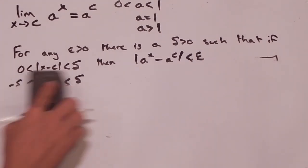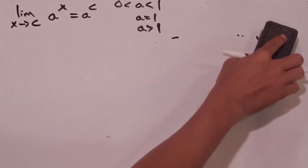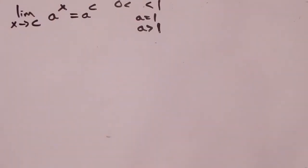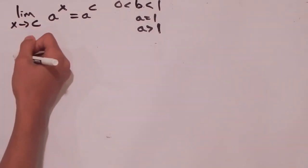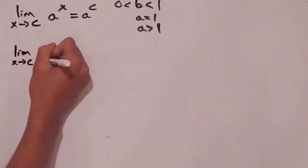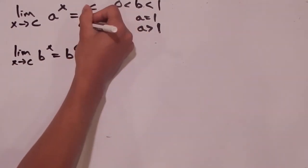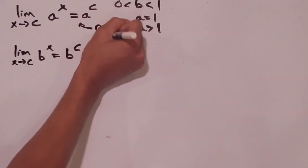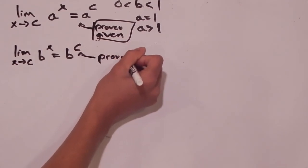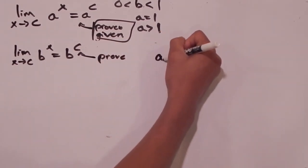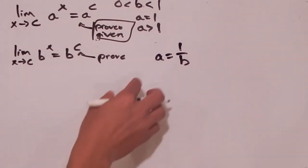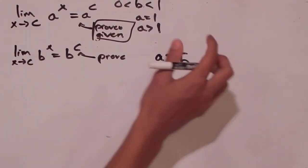Now we'll prove this for when a is between 0 and 1. Let's call that base b to avoid confusion. We want to show the limit as x goes to c of b to the x equals b to the c. We can define a to be 1 over b. Since b is less than 1, a is greater than 1, so we've already proven the limit statement for a.